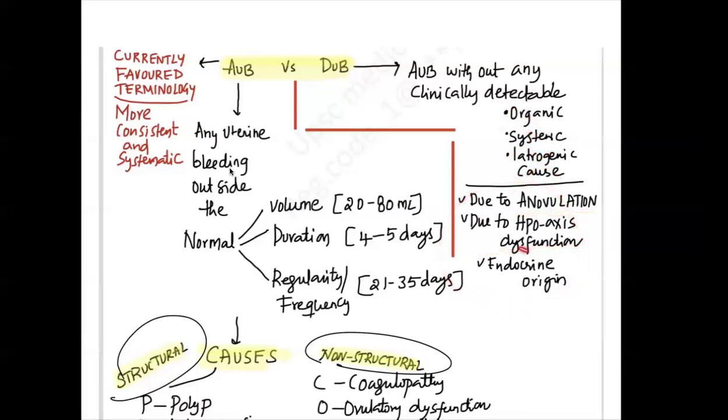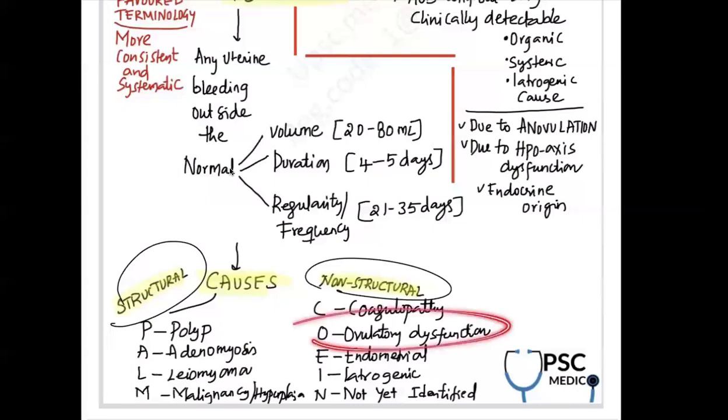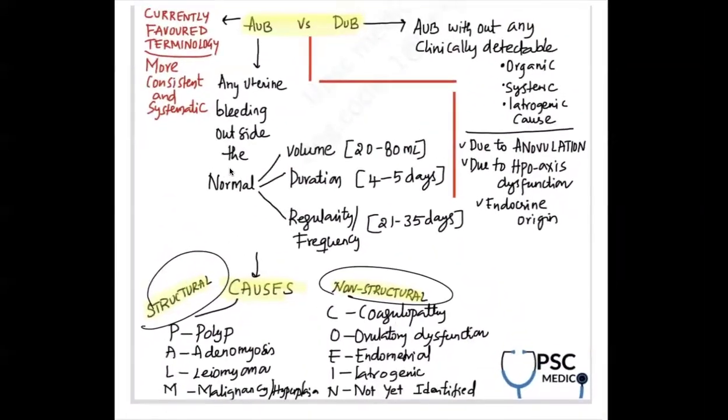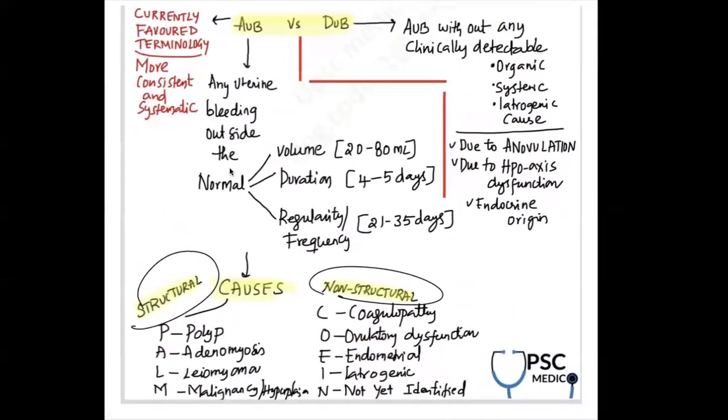It is endocrinal in origin, then we call it as DUB. So AUB without any clinically detectable cause - this ovulatory dysfunction, AUB-O, is actually DUB, because ovulatory function is getting disturbed. This is due to anovulation. So now with this single slide, you have better clarity of what is AUB and DUB. We still use DUB in the literature, but whenever I say DUB, I am only targeting the anovulation part.